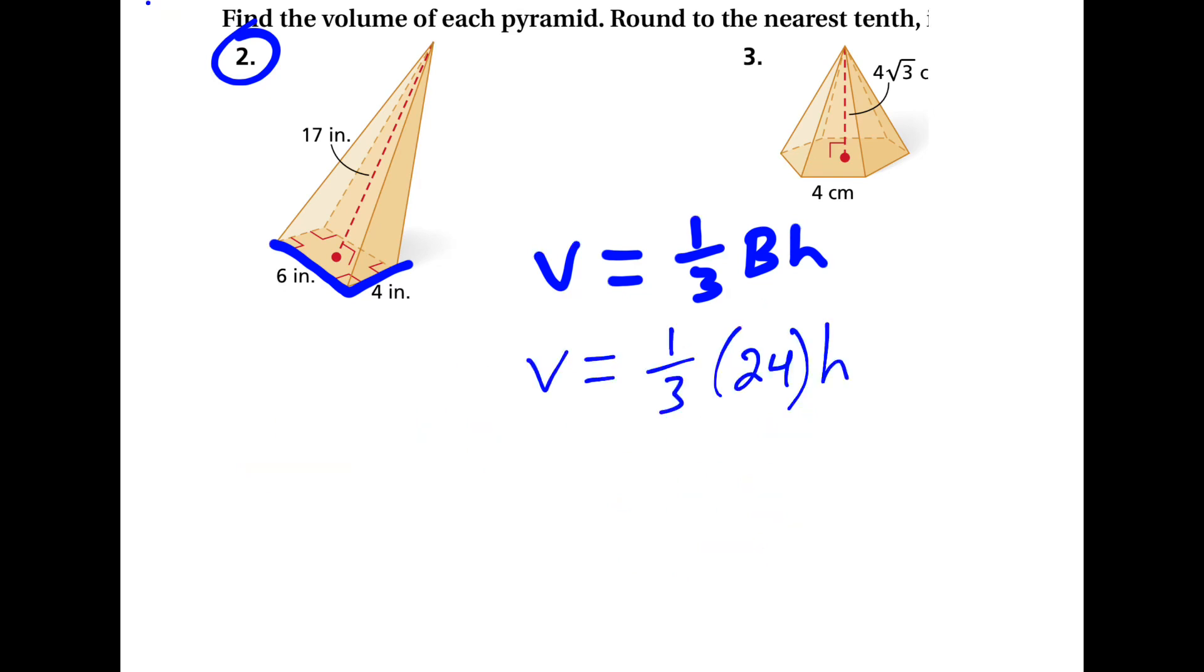Next up is the height. And this is the distance from the vertex at the top all the way down so that it forms a 90-degree angle with the base. And this we are given as 17. So if I multiply this straight across, I get that the volume is 136 inches cubed, because volume uses the unit cubed. It's three dimensions.